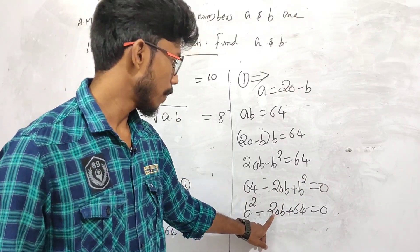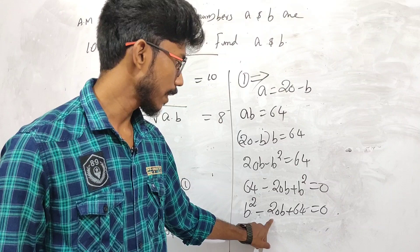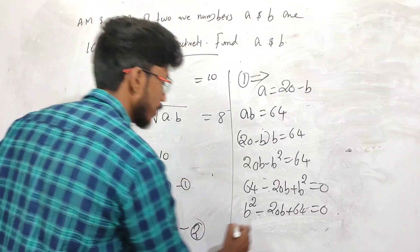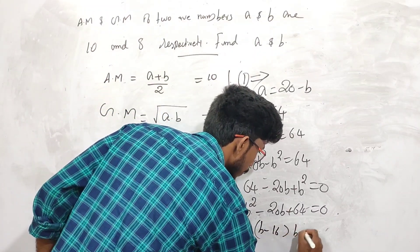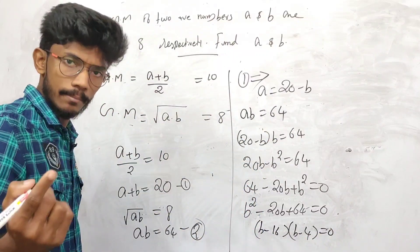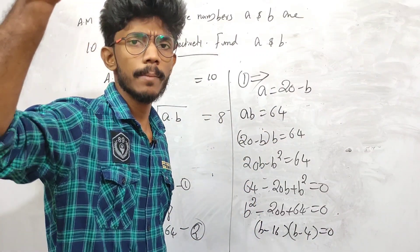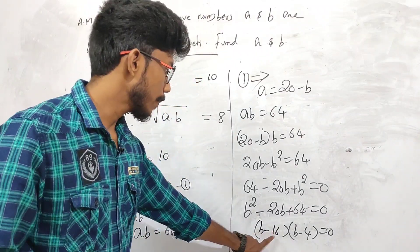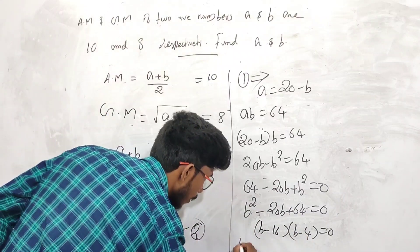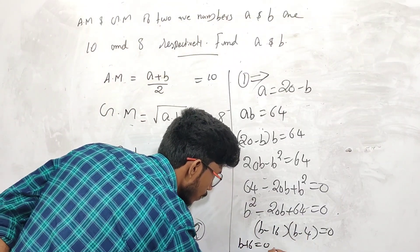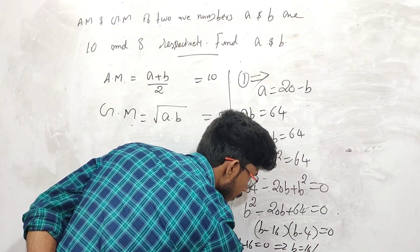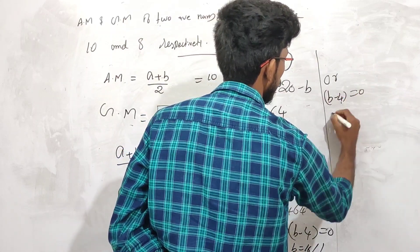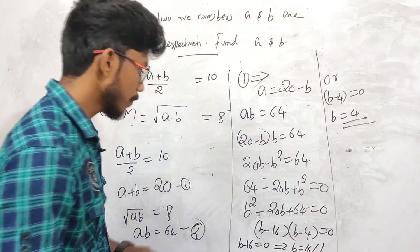Factoring: we need two numbers that multiply to 64 and add to 20, which are 16 and 4. So b minus 16 into b minus 4 equals 0. This gives b equals 16 or b equals 4.